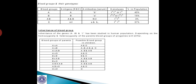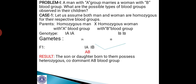Now let me go through the details of the inheritance pattern of human blood groups. Let us consider a problem: a man with A blood group marries a woman with B blood group. What are the possible types of blood groups observed in their children?